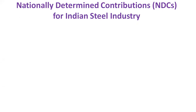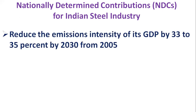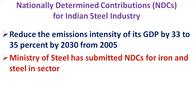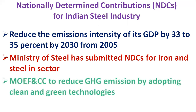Regarding Nationally Determined Contributions (NDCs), the Government of India has submitted its NDCs to reduce the emissions intensity of its GDP by 33 to 35 percent by the year 2030 from the 2005 level. Accordingly, the Ministry of Steel has submitted India's NDCs for the iron and steel sector to the Ministry of Environment and Forest and Pollution Control Board, committing to reduce greenhouse gas emissions by adopting clean and green technologies.